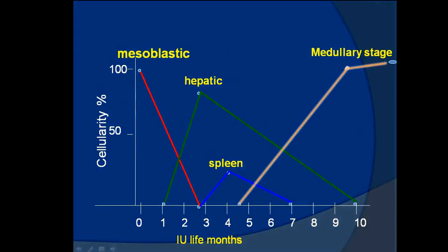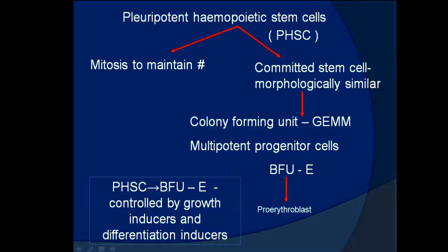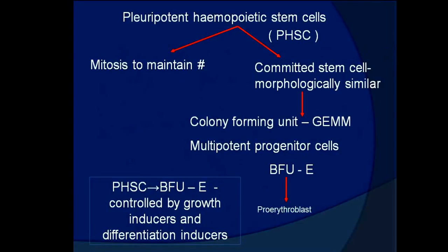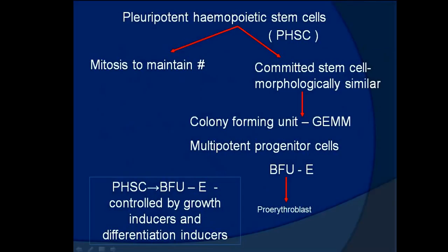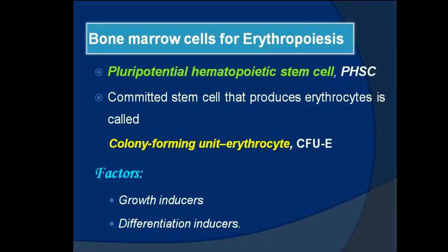Erythrocytes are formed from pluripotent hemopoietic stem cells (PHSC). From PHSC they form colony-forming units (CFU-GEMM), and from them pro-erythroblasts. The committed stem cell that produces erythrocytes is called the colony-forming unit erythrocyte (CFU-E). Factors responsible for erythropoiesis include growth inducers and differentiation inducers.